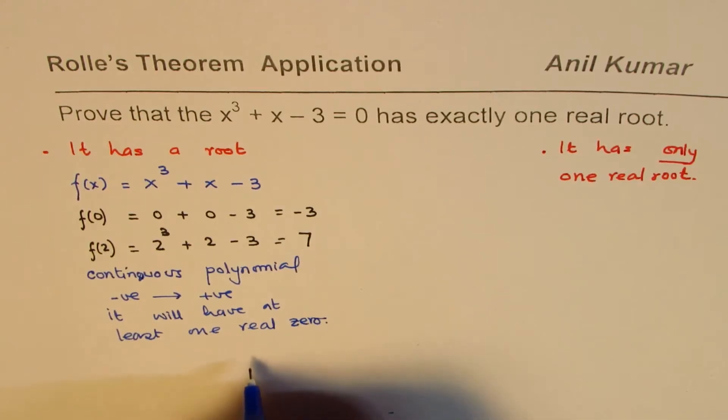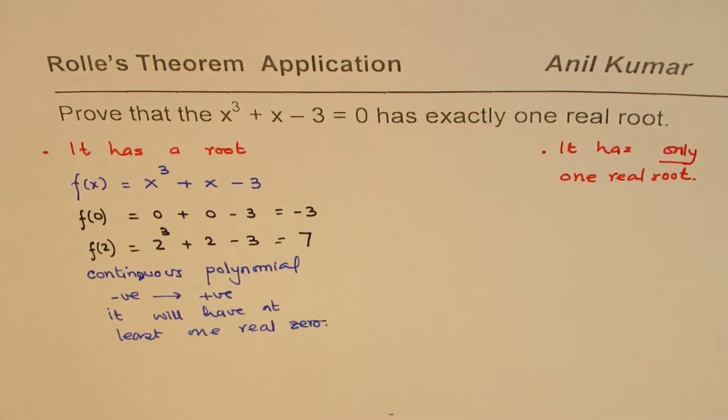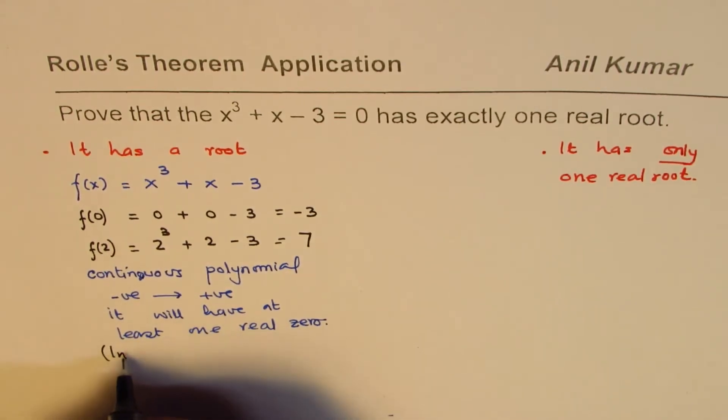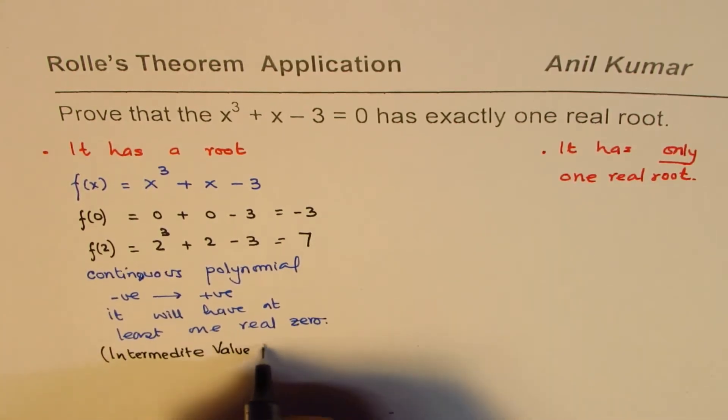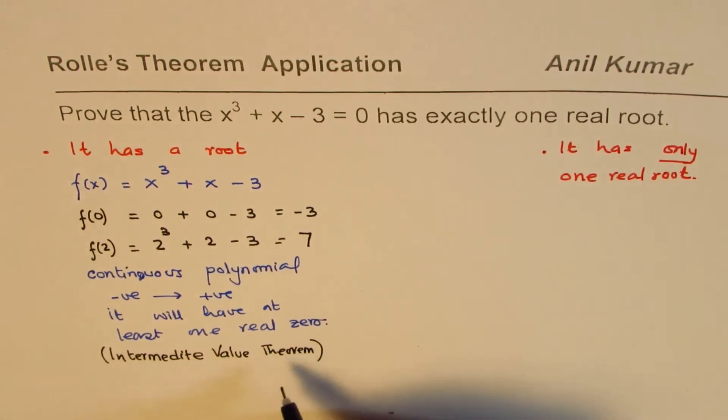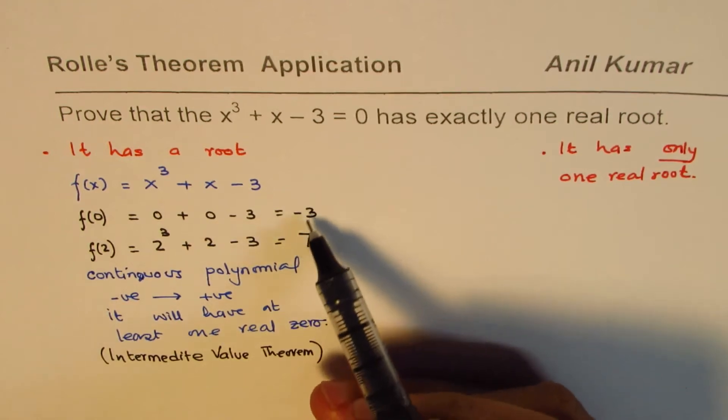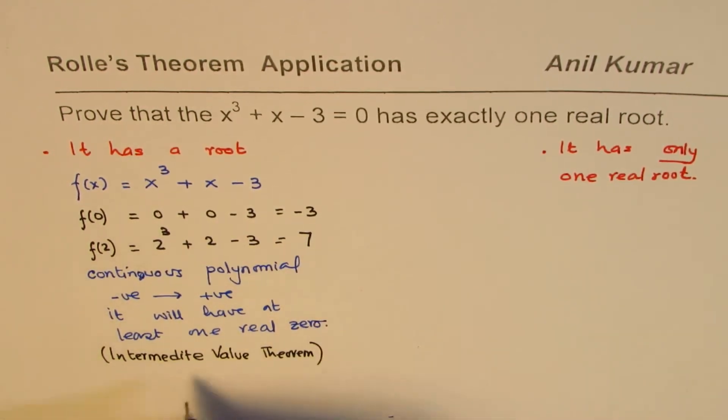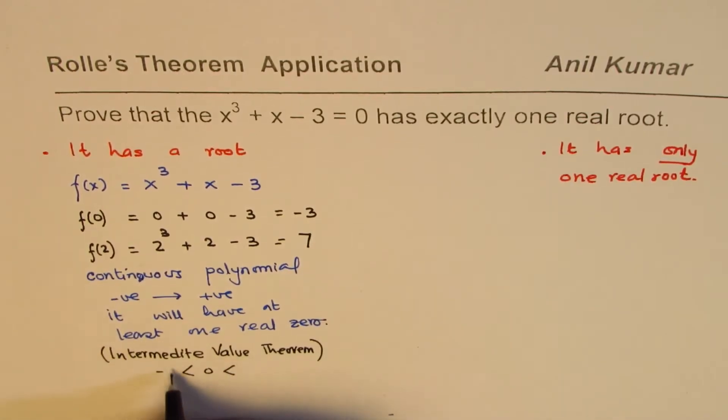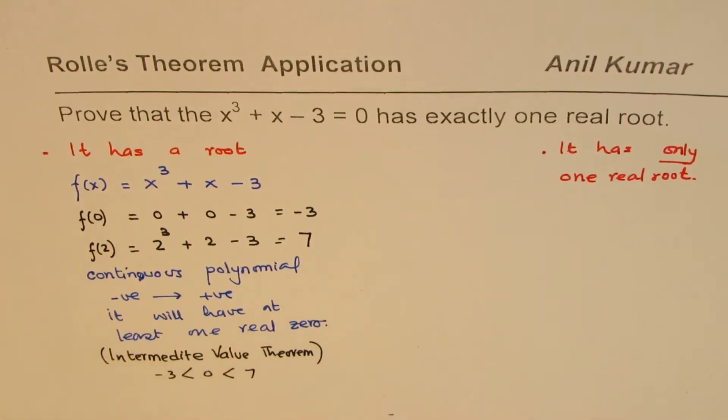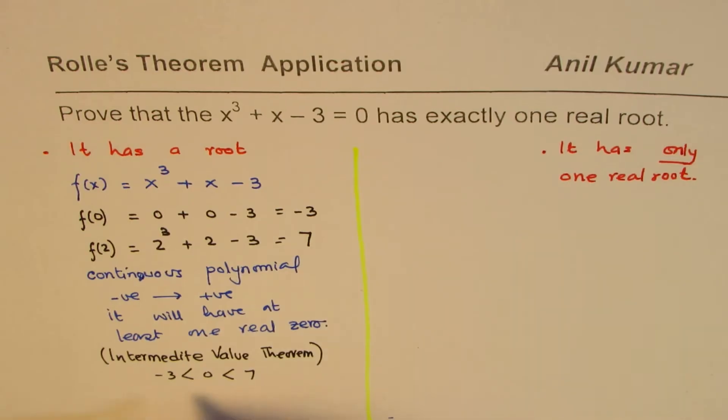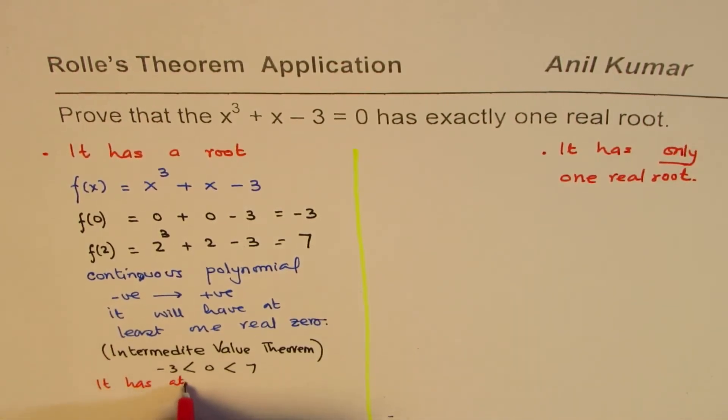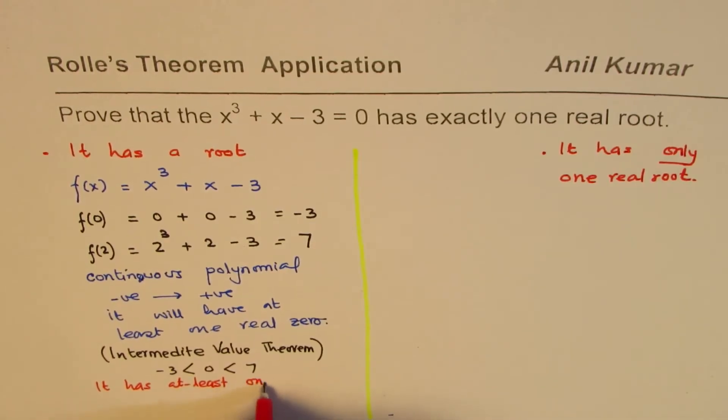Now, some of you who have done intermediate value theorem, they can use that theorem also. It makes sense since we have a continuous function between two values, all the values will be covered. Since 0 is between minus 3 and 7, it will cross through 0. So it will have at least 1 zero. So in this fashion, we have proved that it has at least one real root.